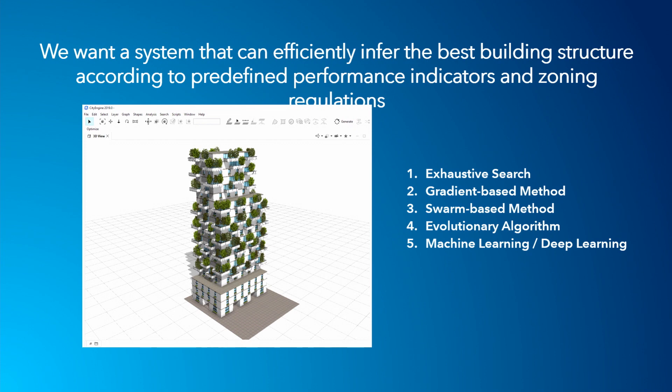Then swarm-based, then evolutionary algorithm like genetic algorithm, and then finally work on machine learning, on deep learning solutions. As you will see in the next slide, the deep learning method will help us or will be useful in order to model complex systems, complex variables.